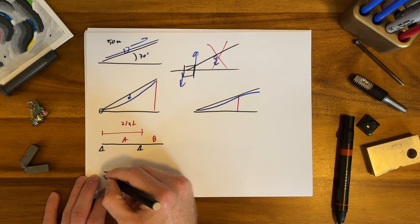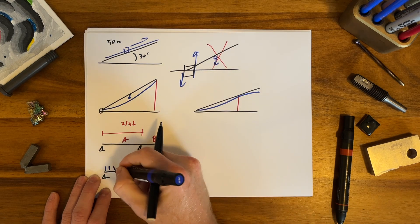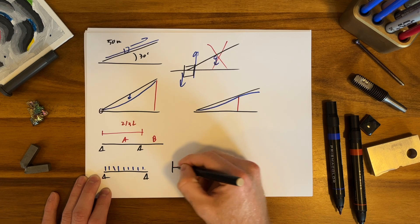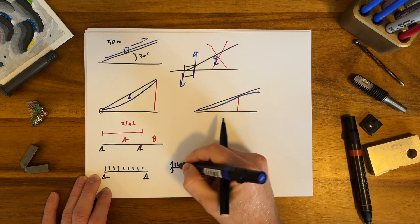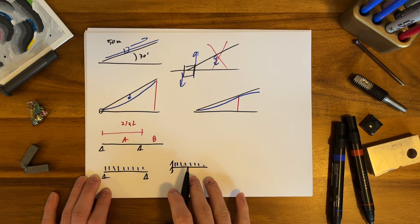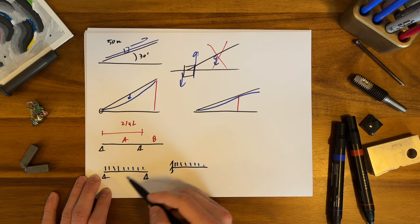I'm going to say this looks a lot like a simply supported beam with a uniformly distributed load, and then this looks a lot like a cantilevered beam with a uniformly distributed load. These answers are actually conservative.